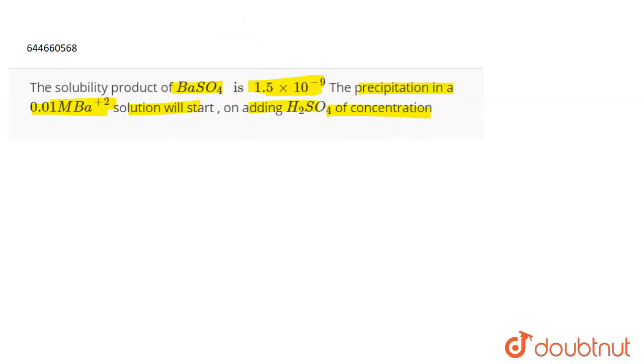What you're given here is the solubility product of barium sulfate. You are also given that you have 0.01 molar BA plus 2. This is the solubility or the concentration of the barium plus 2 ions. It says that at what concentration of H2SO4 will the precipitation start.